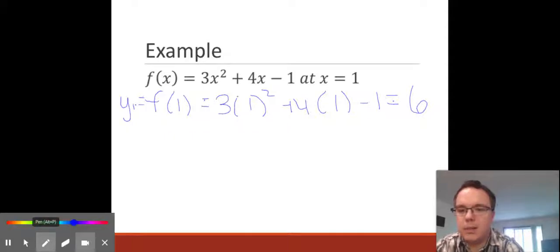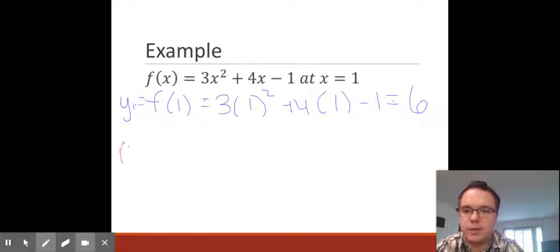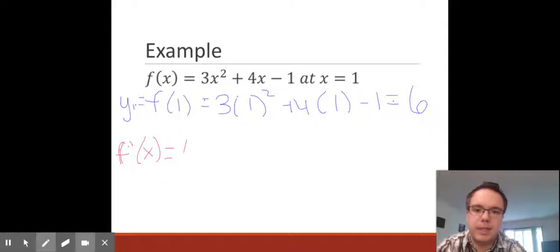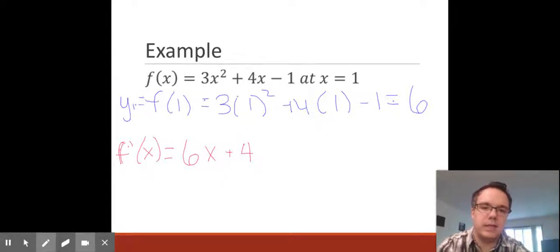And then find our derivative. To find the derivative of our function, we use the power rule. So 2 times 3 is 6x. Bring the 1 down, so we get 4. x to the 0 is 1, so we just get 4. And the derivative of negative 1 is 0. So f'(x) = 6x + 4.